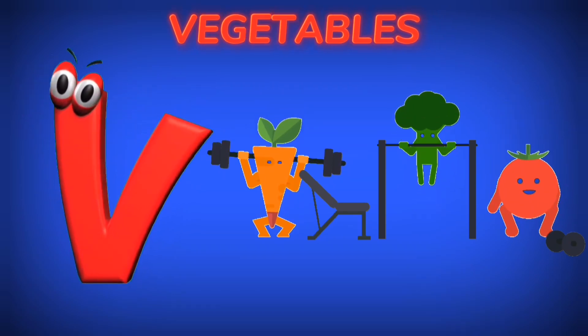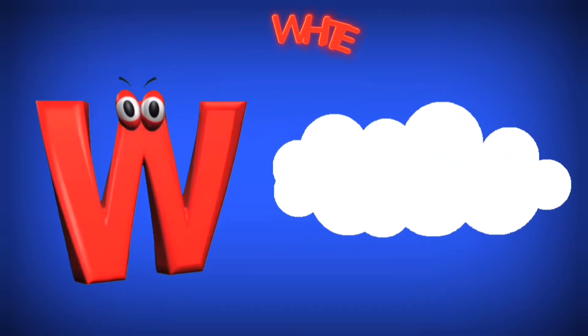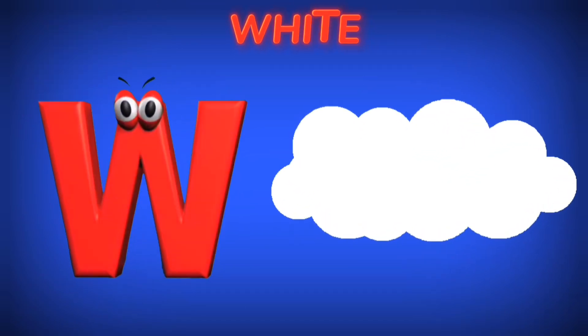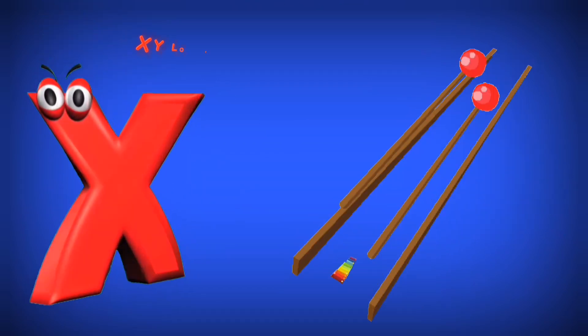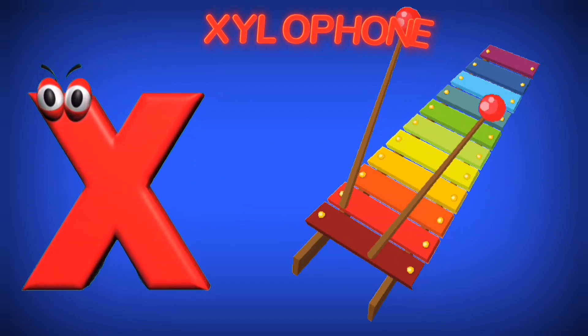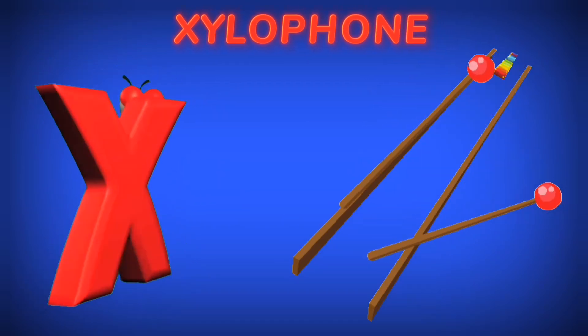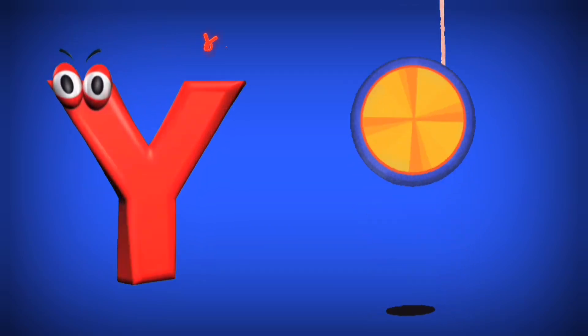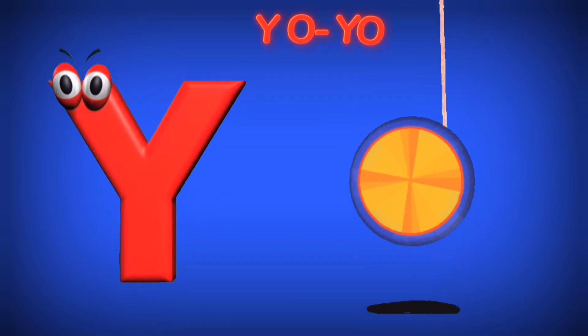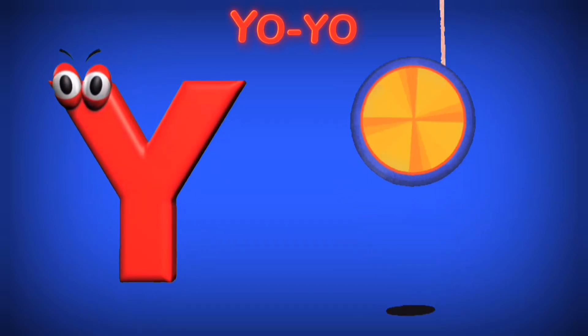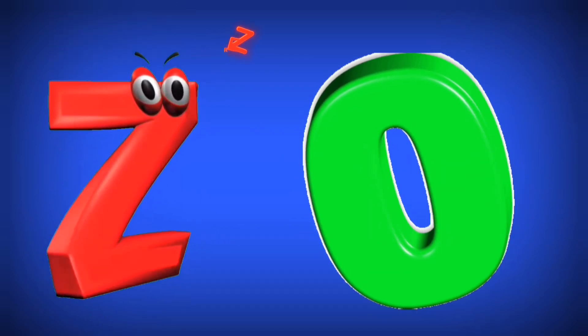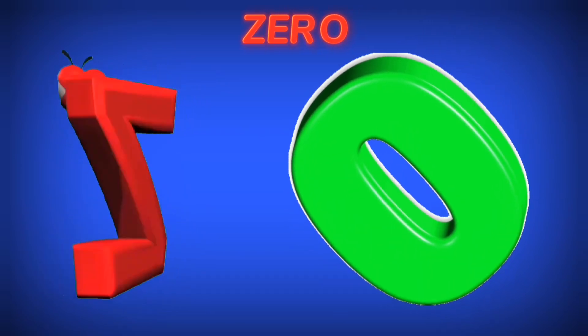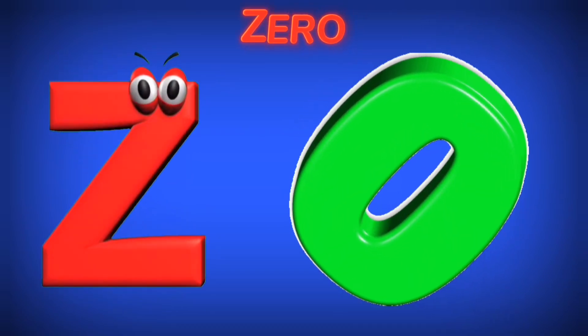W is for White. W. White. X is for Xylophone. X. Xylophone. Y is for Yo-yo. Y. Yo-yo. Z is for Zero. Z. Zero.